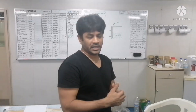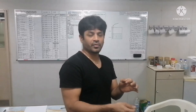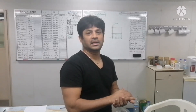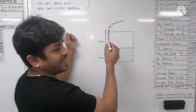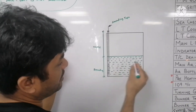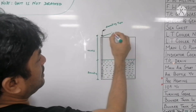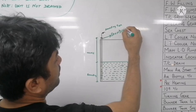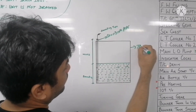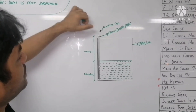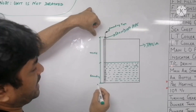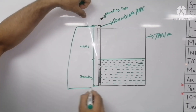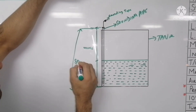Before taking everything into account, we need to know how to do the bunker calculation. For that, we need to do the sounding or ullage to know the exact quantity inside the tank. Suppose this is a tank filled with oil. This is your sounding pipe. If I drop the sounding tape from here down to the bottom of the tank, that distance is called sounding.